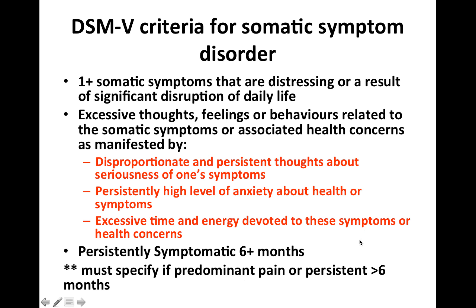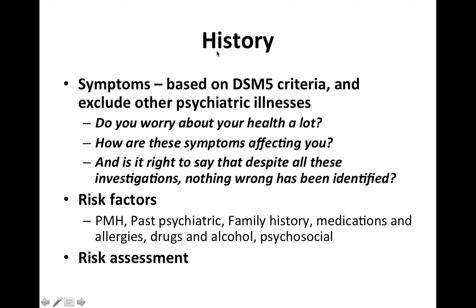In terms of the history, you'll want to ask about the symptoms based on the DSM-5 criteria and exclude any other psychiatric illnesses. You'll also want to go into risk factors for psychiatric issues as well as a risk assessment. For symptoms, you can ask questions like: do you worry about your health a lot? How are these symptoms affecting you? And is it right to say that despite all these investigations, nothing wrong has been identified? Risk factors can be divided into past medical history, past psychiatric history, family history, medications, allergies, drugs, alcohol, and psychosocial factors. Risk assessment involves assessing their risk to themselves, to others, their reputation, and any suicidal ideation.